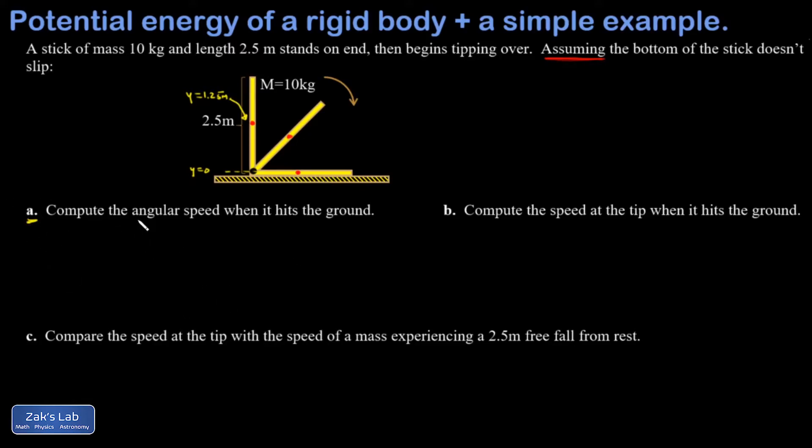Compute the angular speed when it hits the ground. In our initial state, everything is totally stationary. But our center of mass is above the 0 Y coordinate. I guess I'll call it Y initial for the center of mass. In the final state, the Y coordinate of the center of mass is 0. So I don't have to write that at all. There's no translational motion happening. This is just pure rotation. So I write one-half I omega squared.